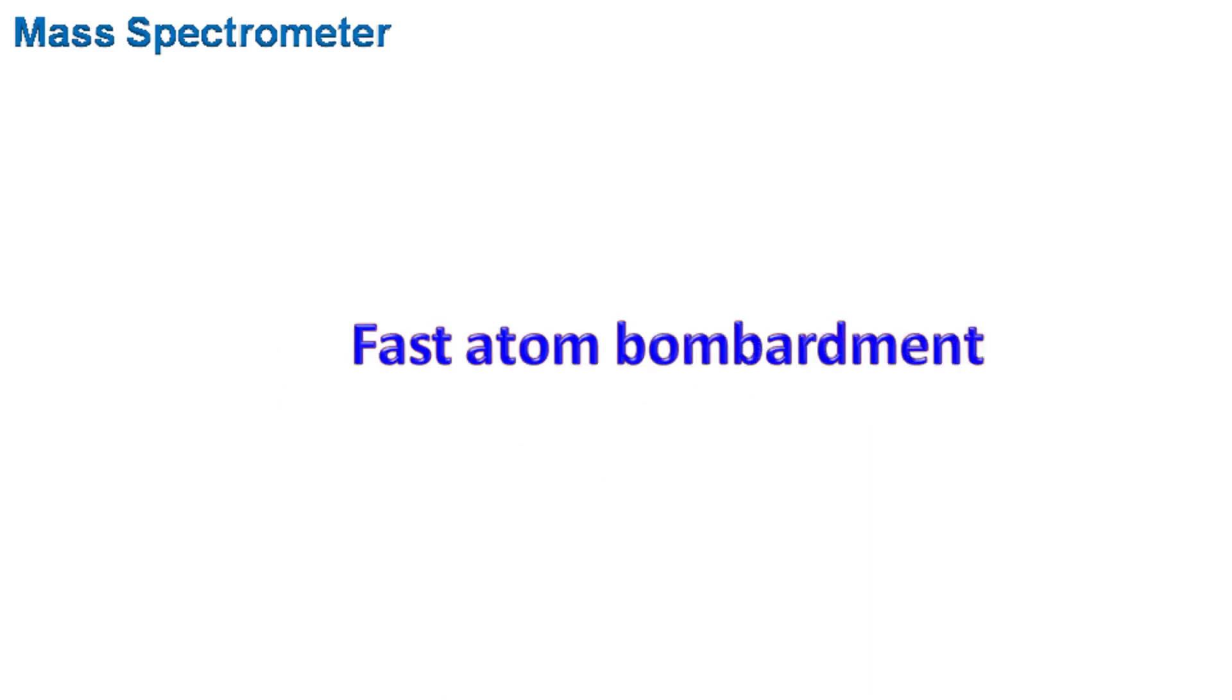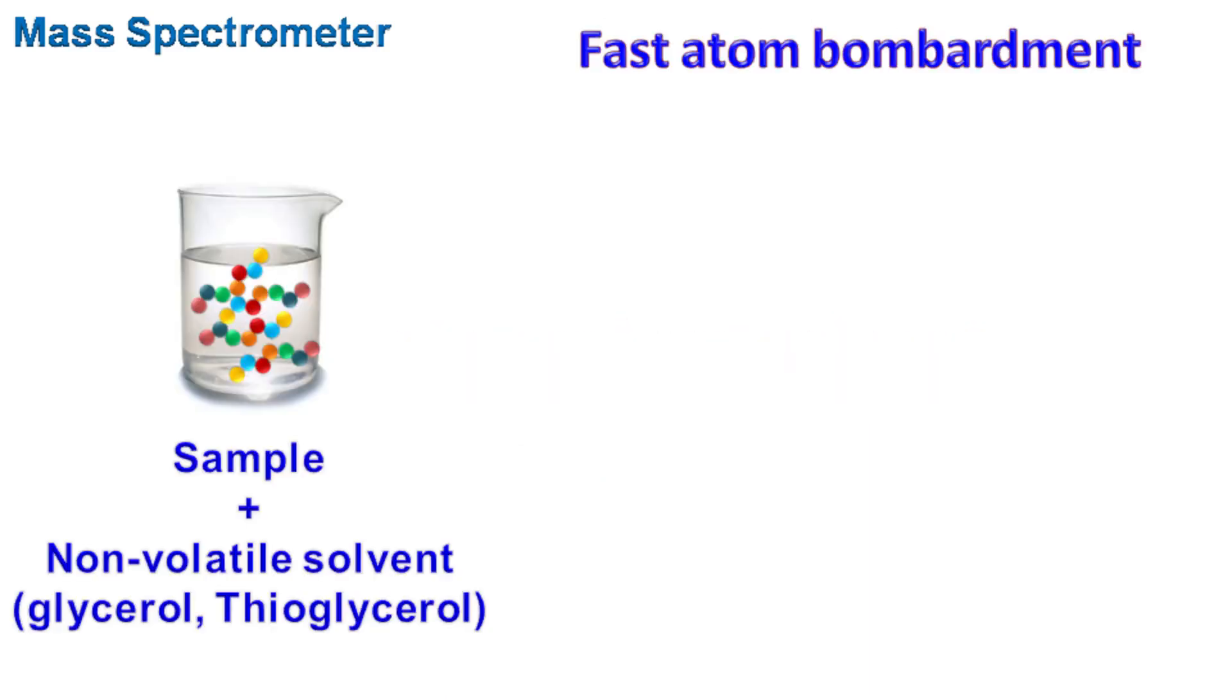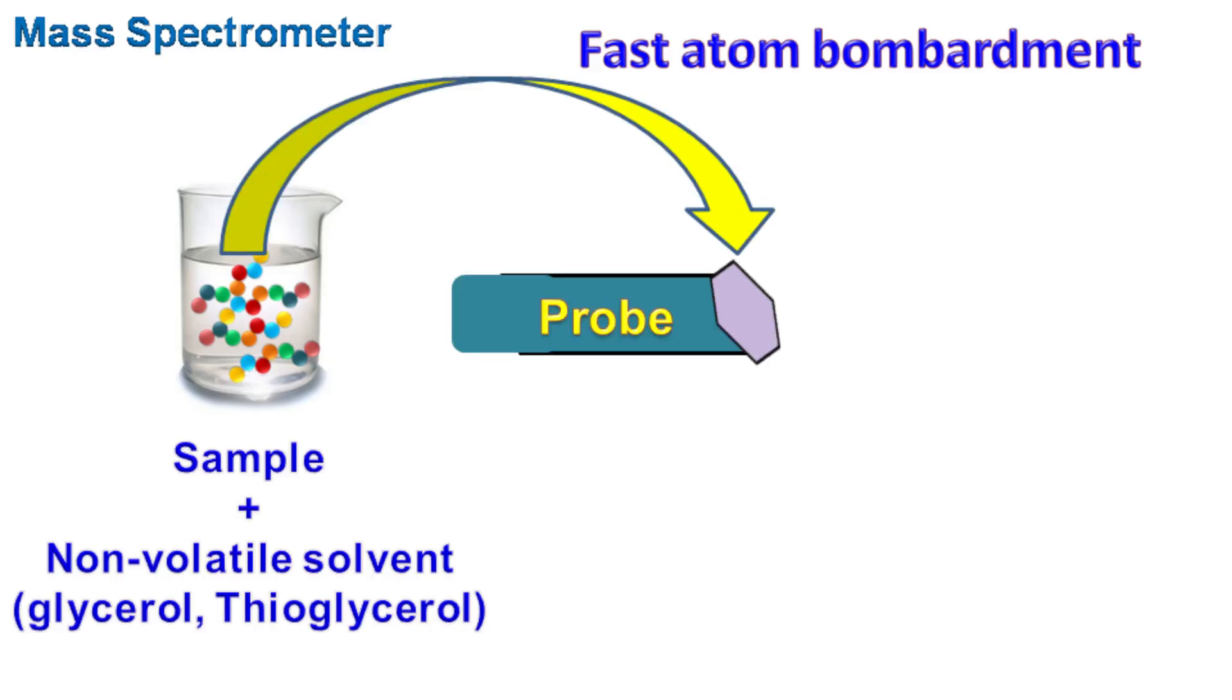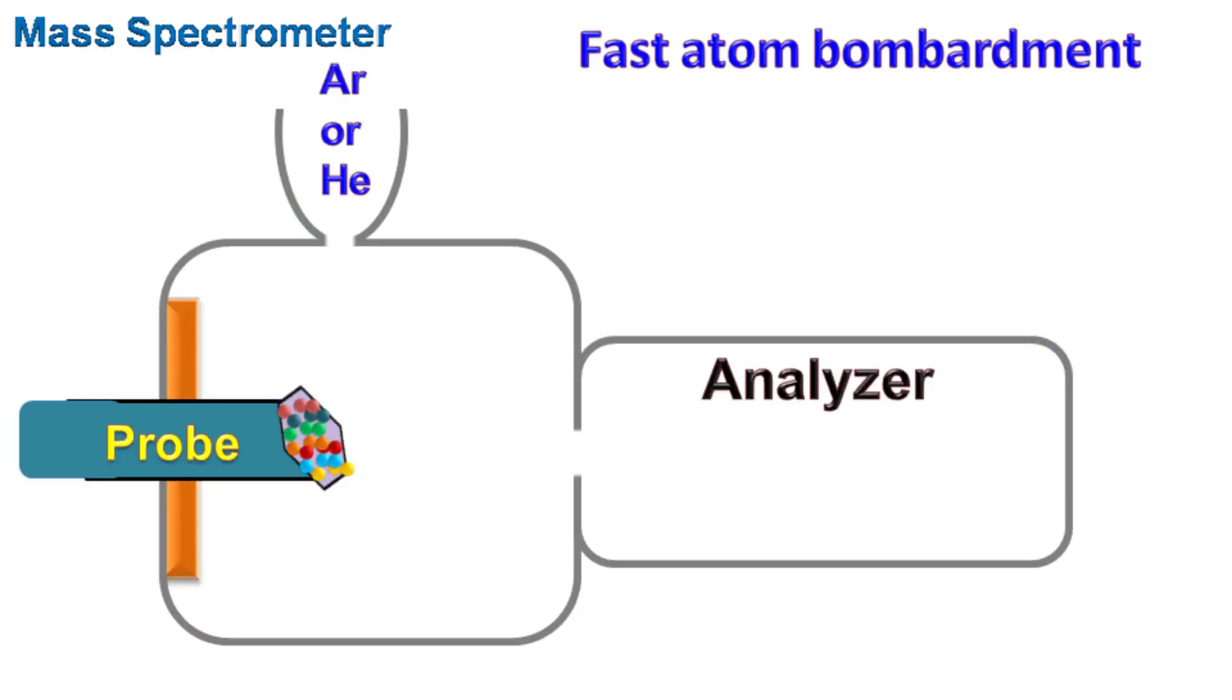Fast atom bombardment: In this technique, the sample molecules are mixed with involatile solvents such as glycerol or thioglycerol. This mixture is applied on the probe and bombarded with a beam of inert gas such as argon, helium, or xenon at high velocity. This bombardment ionizes the sample molecules which are to be analyzed.